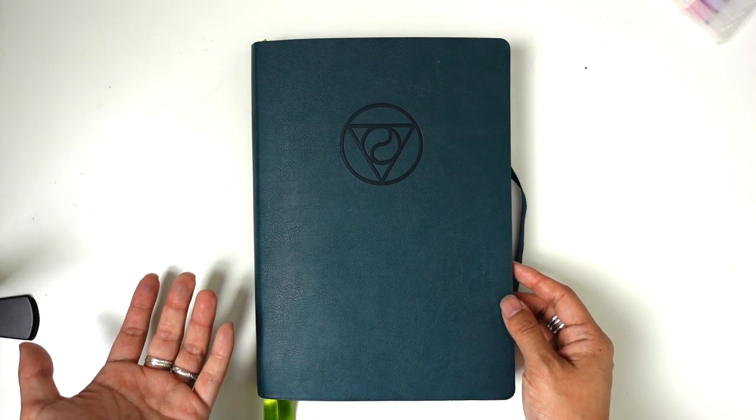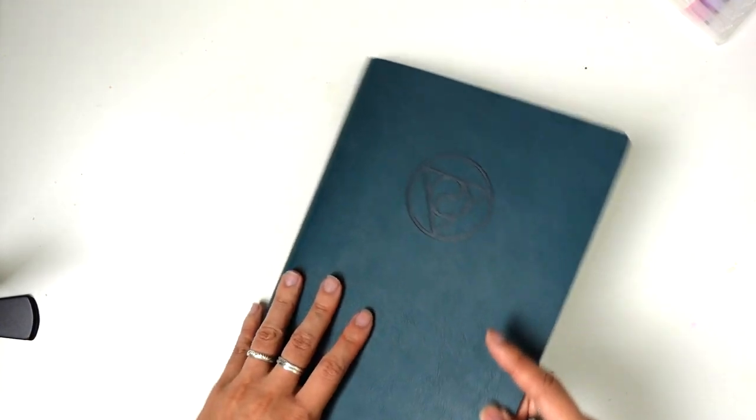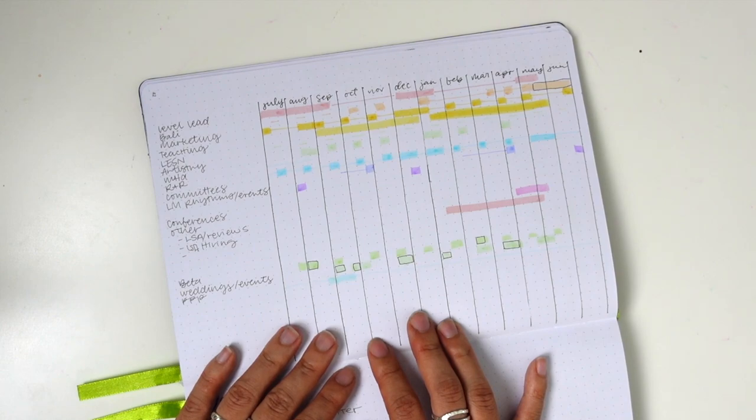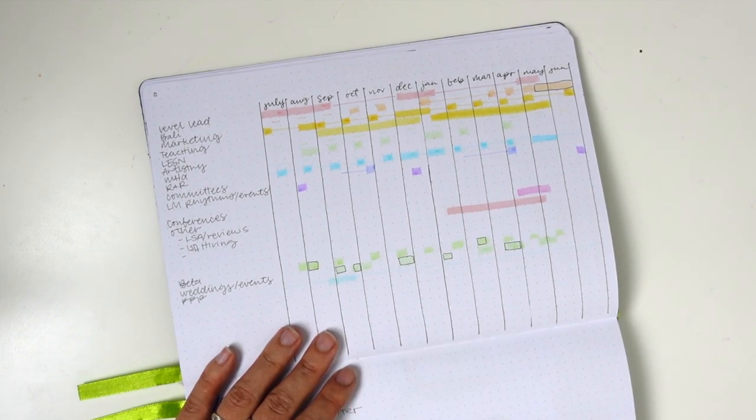Right now, I'm using a B5 Passion Planner journal to map this out. One of the things that my office has been talking about is about workload. What does that mean? What projects do we have capacity to take on? What do we leave behind?